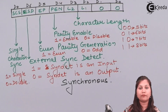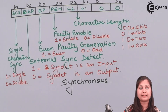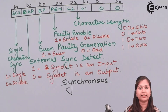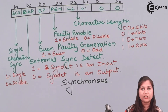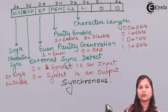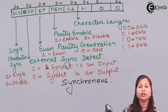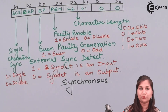This mode instruction control word in the 8251 determines the functions of the 8251 in both synchronous and asynchronous modes. In this video we studied the mode instruction format of the 8251 programmable communication interface, also known as the USART or universal synchronous asynchronous receiver transmitter.